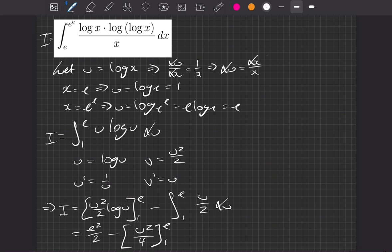And now then, if we move this over to the right-hand side, I is equal to the e squared on 2. When we plug e squared into this, what are we going to get? e squared on 4. So we've got minus e squared on 4. And when we plug 1 into that, 1 on 4. And we're going to have a minus and a minus, so that's going to make a plus. So plus 1 on 4.